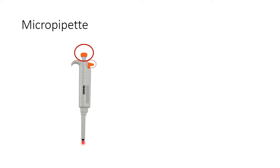This orange colored part is known as the tip ejector. It is used to remove the disposable tip after use.